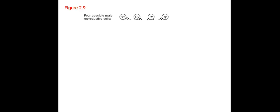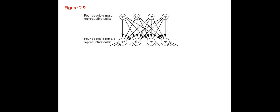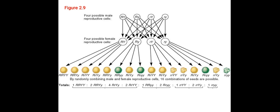Here is another pictorial representation in which the four possible male reproductive cells are being fertilized with four possible female reproductive cells, giving rise to a total of 16 combinations and giving rise to the phenotypes of again 9:3:3:1.